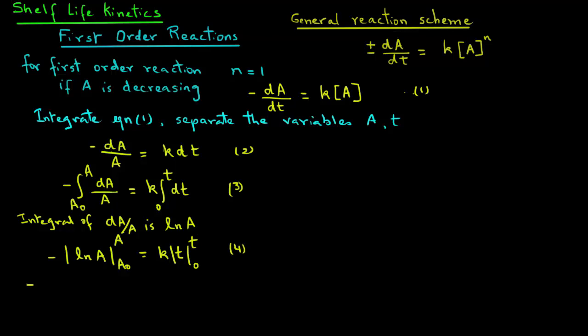Next, we can simplify our equation 4 as minus, in parenthesis, natural log of A minus natural log of A0 equals k, and in parenthesis, we have t minus 0. And by introducing the negative sign in the left-hand side, we have natural log of A0 minus natural log of A equals k times t. And this is equation 5.